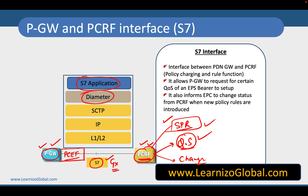The PCRF also informs the EPC to change status whenever new policy rules are introduced. So whenever there is a change in policy, it can inform the EPC during ongoing sessions to change parameters or change the capabilities of a particular UE or those particular bearers. In ongoing sessions, the PCRF can also update policy rules dynamically.